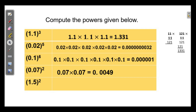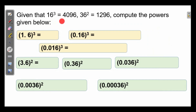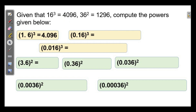And 0.07 squared: 7 squared is 49, and 2 into 2 gives 4 decimal places, so the answer is 0.0049. And 1.5 whole squared is 2.25 — 2 decimal places in the answer. Now: 16 cubed is equal to 4096 and 36 squared is equal to 1296. Compute 1.6 whole cube — how many decimal places? 1 into 3 gives 3 decimal places. We know 16 cubed is 4096, so counting 3 decimal places from the right: 1, 2, 3 — put a point after 4. The answer is 4.096.